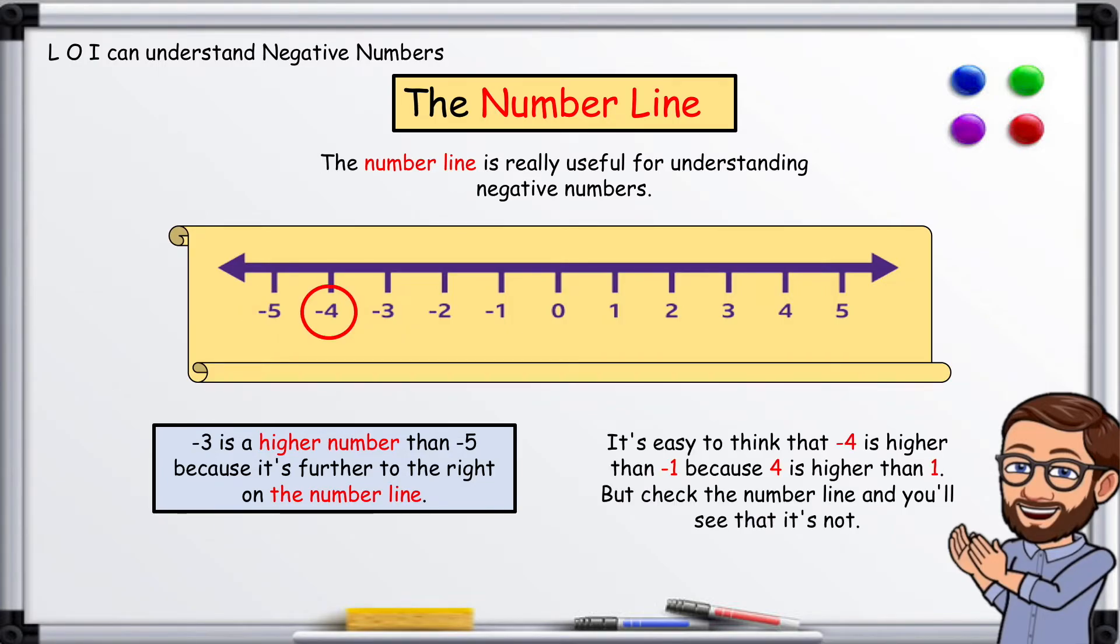It's easy to think that negative four is higher than negative one because four is a higher number than one. But check the number line and you'll see that it's not.